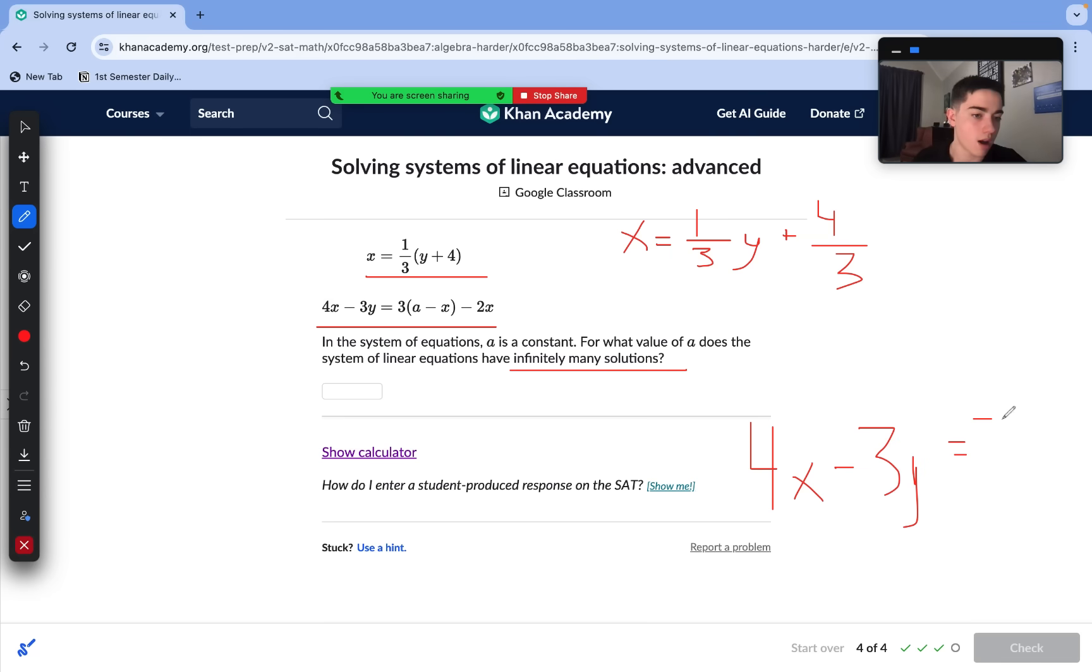So 4x minus 3y equals 3a minus 3x minus 2x. Negative 3x minus 2x is negative 5x. So let's replace that with negative 5x. And now let's move everything over to follow x on our left side. So we add 5x, we're left with 9x. We move over the 3y. So 9x equals 3y plus 3a. So as we noticed, our x and y's have to be the same. And so do our constant values. Let's take a look. To get our x and y's the same, I hope that you can notice after doing all of this work that our first equation, we need to multiply it by 9. 1x times 9 is 9x. 1 third times 9 is 3. So we're going to multiply this whole top equation, every value by 9.